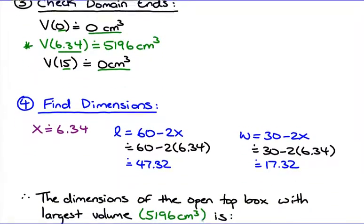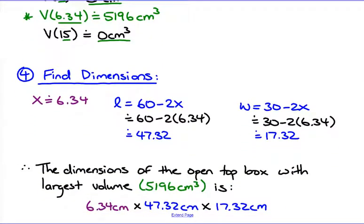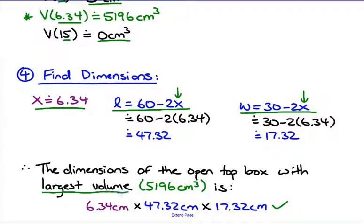But that's not what the question asked for — they asked for the dimensions. So remember: X is your height. Sub 6.34 into the length formula (60 − 2X) to get the length, and sub it into the width formula (30 − 2X) to get the width. In a therefore statement, list all three dimensions — height, length, and width — with units in centimeters. If you want, you can also state the largest volume.